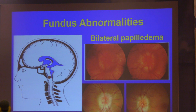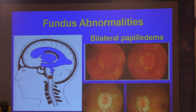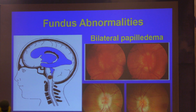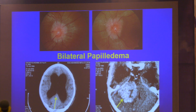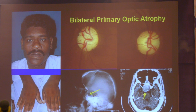Papilledema has only two causes: any space-occupying accumulation in the brain, or any problem in the venous drainage — or internal hydrocephalus; these are the three causes. MRI and CT make our life easy now. When we studied, we were only measuring the papilledema through the ophthalmoscope and tracking its regression. Today, things are much, much easier.